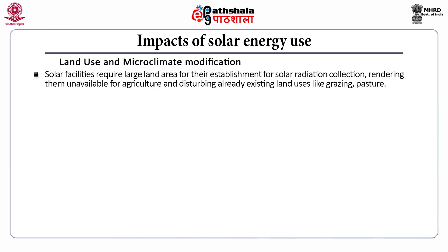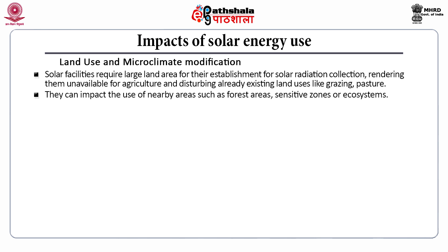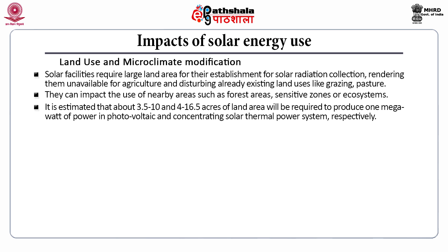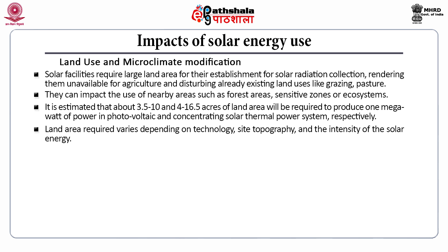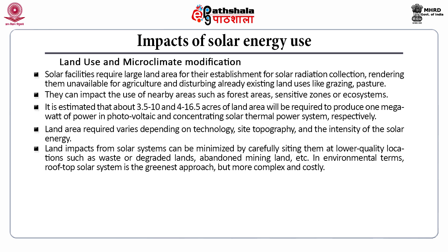Solar facilities require large land area for solar radiation collection, rendering land unavailable for agriculture and disturbing existing land uses like grazing and pasture. They can impact nearby forest areas, sensitive zones or ecosystems. It is estimated that about 3.5 to 10 acres and 4 to 16.5 acres of land are required to produce 1 megawatt of power in photovoltaic and concentrating solar thermal power systems respectively. Land area required varies depending on technology, site topography and solar intensity.